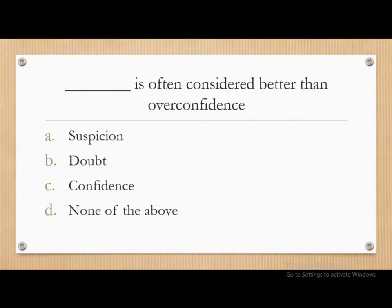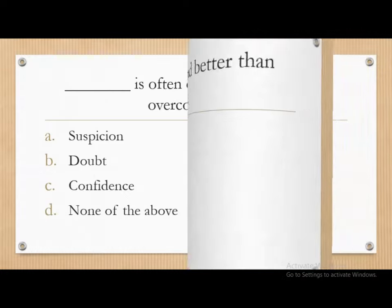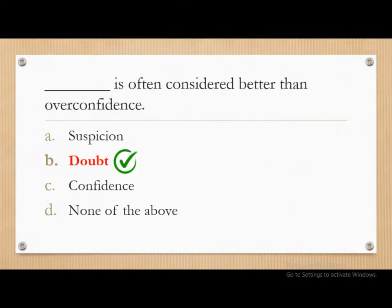Moving on. Dash is often considered better than overconfidence — options are: suspicion, doubt, confidence, or none of the above. The correct answer is doubt. Doubt is often considered better than overconfidence.